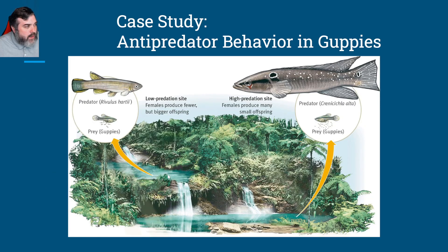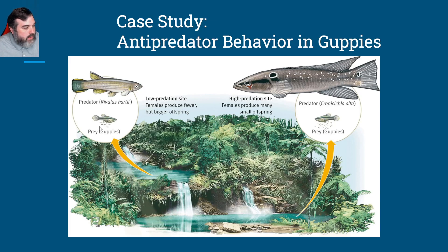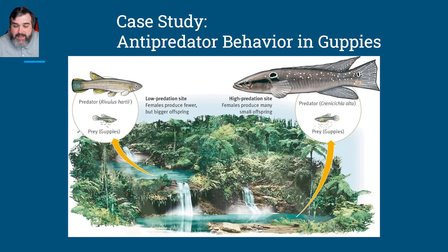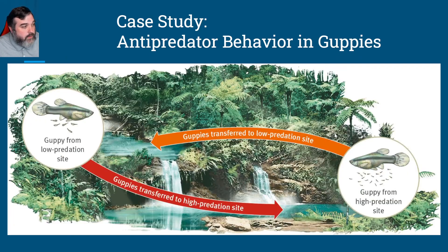So we have the low predation site upstream and the high predation site downstream. This graphic summarizes it all: at the low predation site, females produce fewer but bigger offspring — only about five fry. Whereas at the high predation site, it's a good dozen or dozen and a half fry. The females produce lots and lots of offspring because it's a game of numbers.